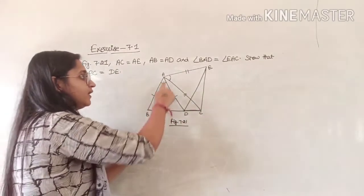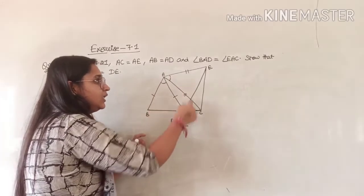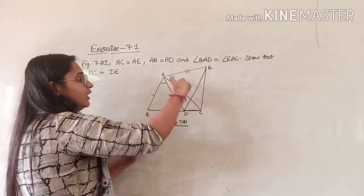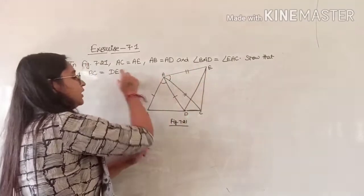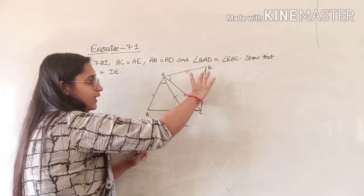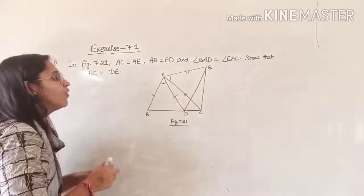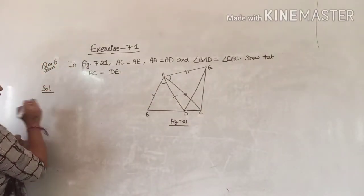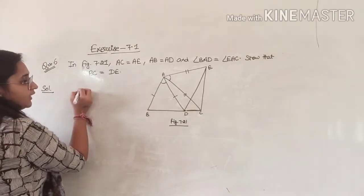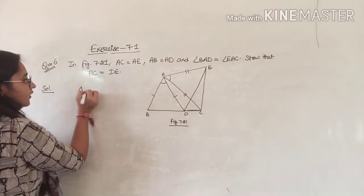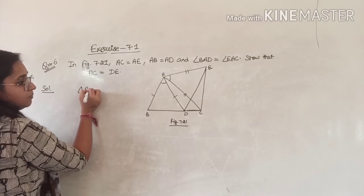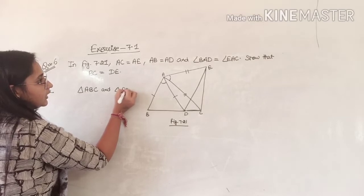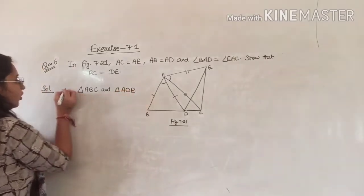Same way, if I take triangle ADE, then DE is the side I have to prove. So the most important point is: I will take triangle ABC and triangle ADE.